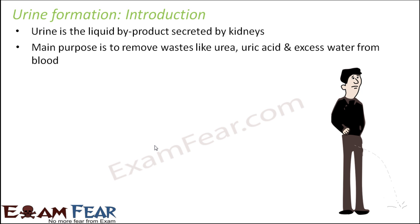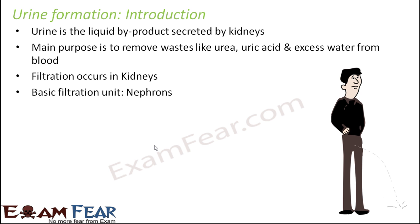The main purpose of urine is to remove wastes like urea, uric acid, and excess water from the blood. The filtration occurs in the kidneys. Now, where are these waste materials present inside the body? The waste materials are present in the blood, so the blood needs to be filtered. When you filter blood, the filtrate will consist of all the waste materials, and that filtrate is thrown out of the body as urine. The basic filtration unit inside the kidney is the nephron.